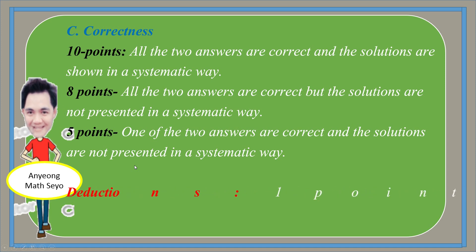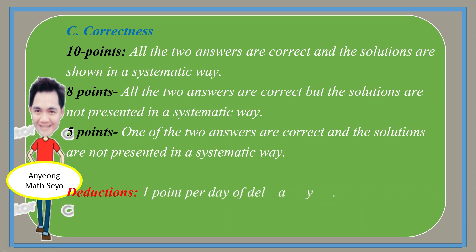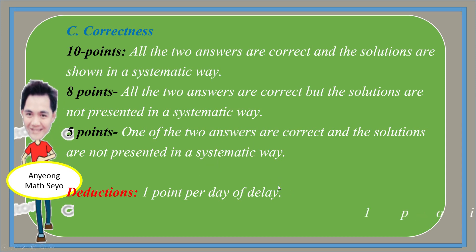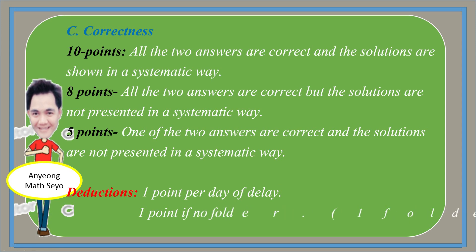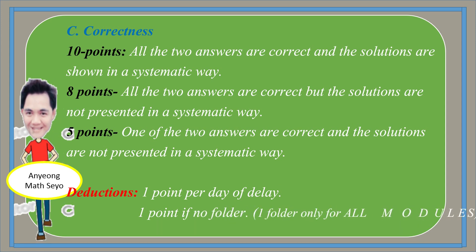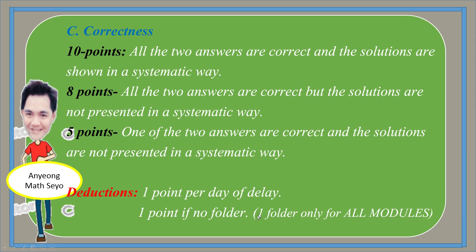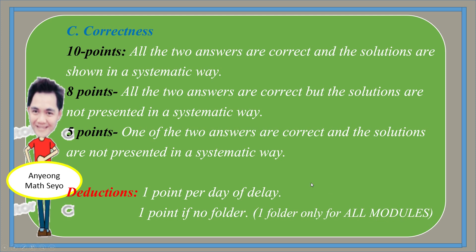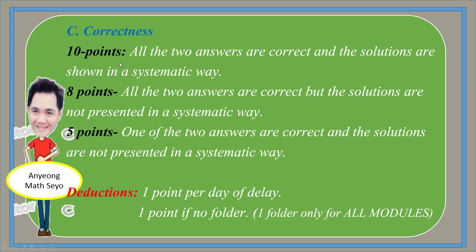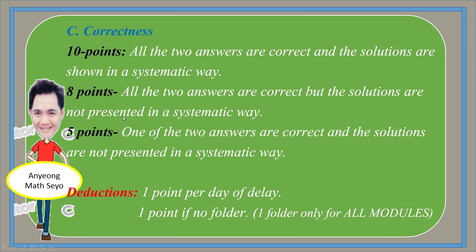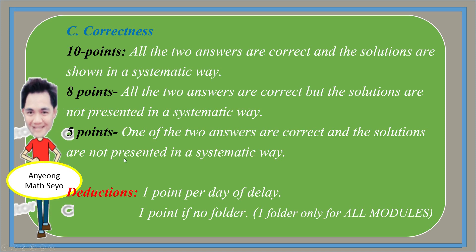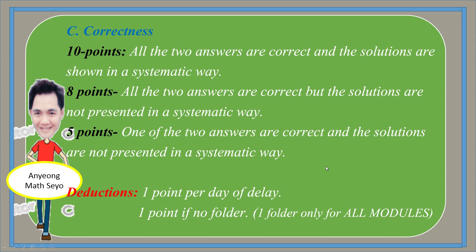Deductions: one point per day of delay from the 30-point total. One point deducted if there is no folder — use one folder for all activity forms and one folder for all modules. The order should be: Module 1, Module 2, Module 3, Module 4, Midterm Exam, Module 5, Module 6, Module 7, Final Exam. That is what you will pass to your instructor.